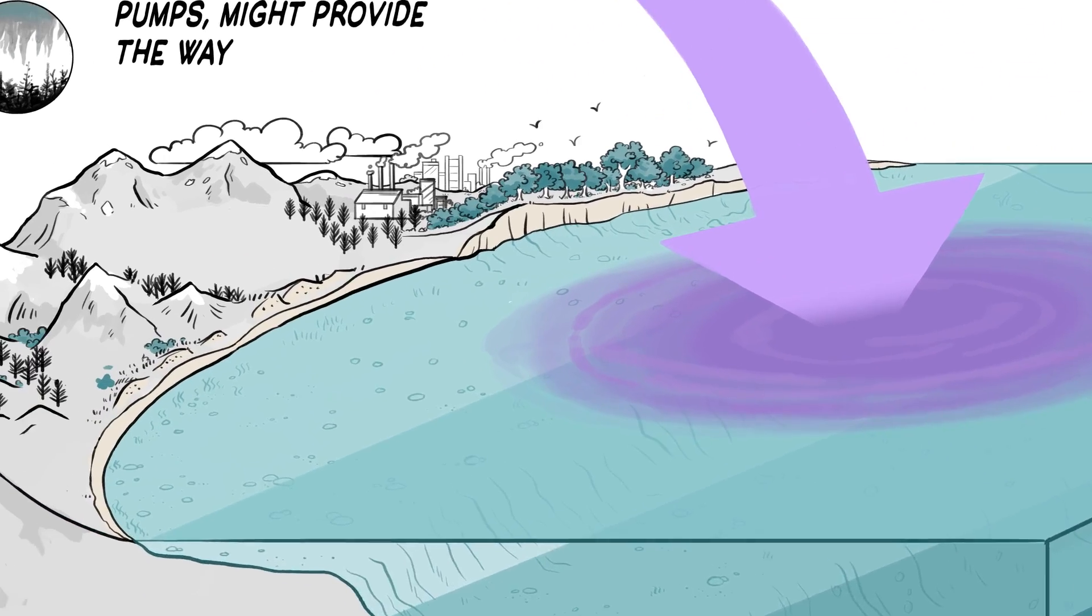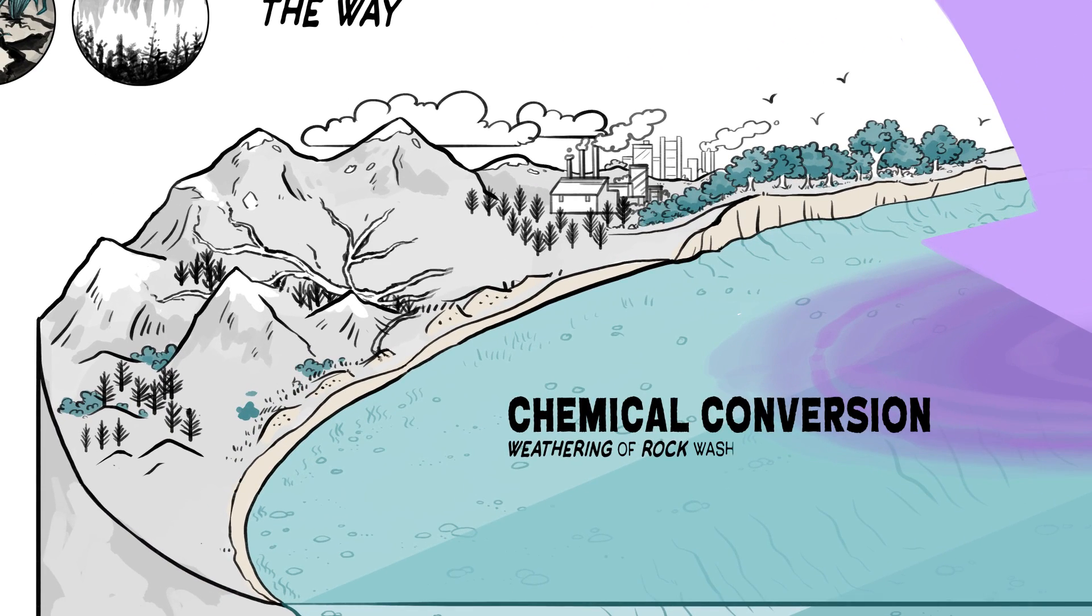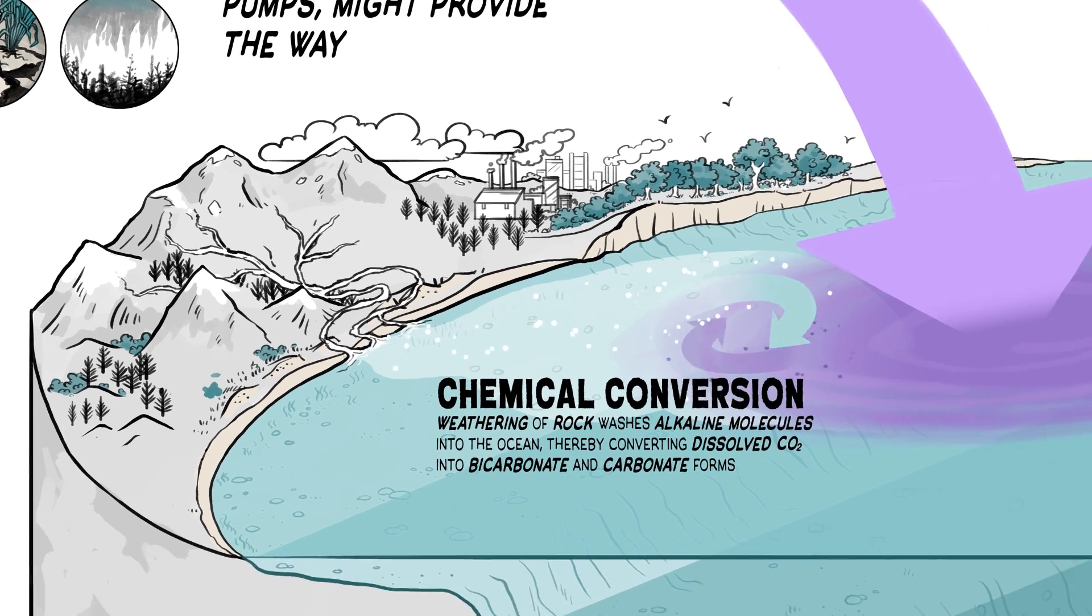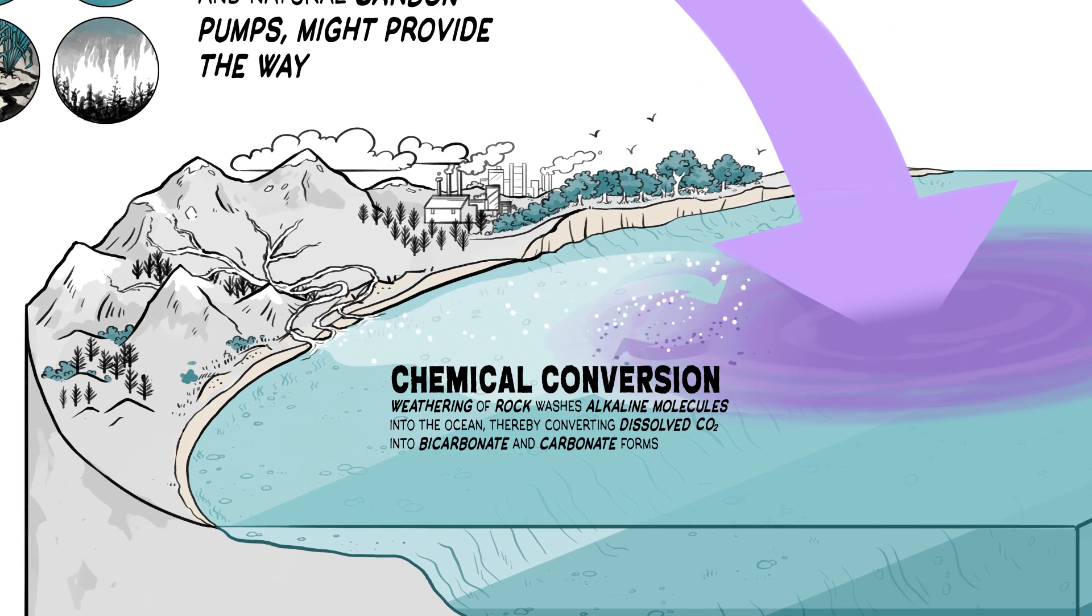Over geologic timescales, weathering of rock washes alkaline molecules into the ocean, thereby converting dissolved CO2 into bicarbonate and carbonate forms. This natural alkalinity allows the ocean to take up more CO2 without further increasing ocean acidity.